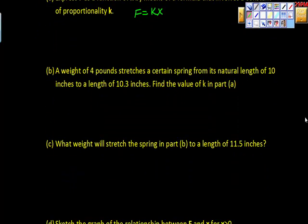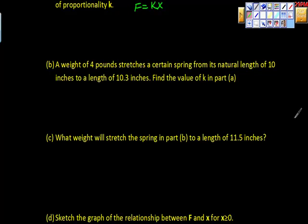This should be really easy for you by now. If not, please go back to the first two videos and watch them. It says here, portion B, a weight of 4 pounds stretches a certain spring from its natural length of 10 inches to a length of 10.3 inches. Find the value of k in part A.